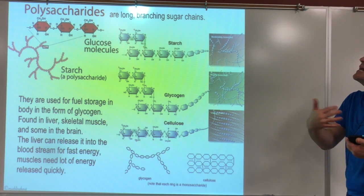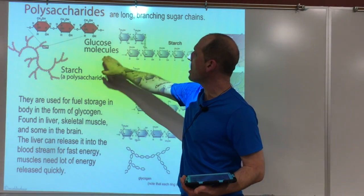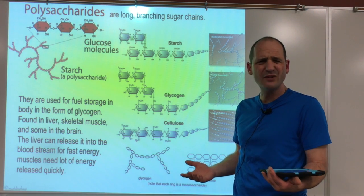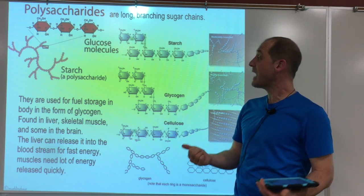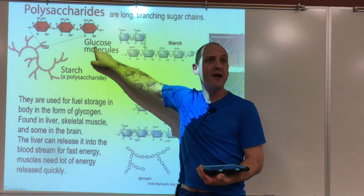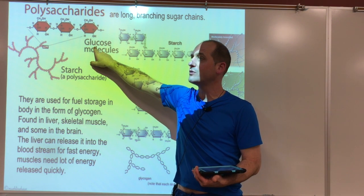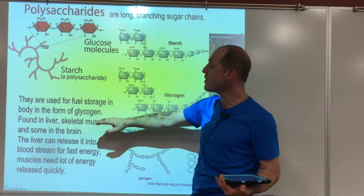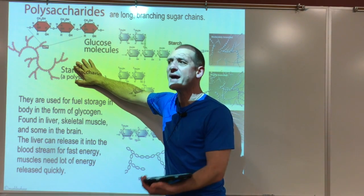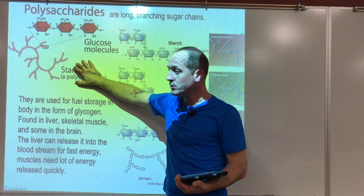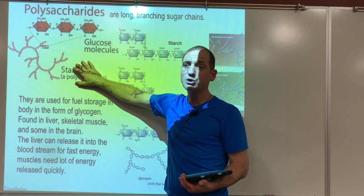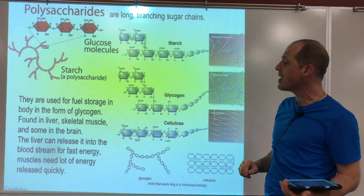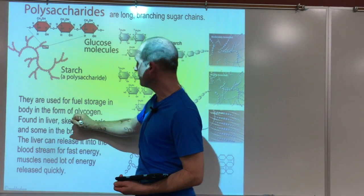Once inside the body, we can also reconnect glucose molecules to one another and make an energy storage form. We don't store a huge amount this way, but when we need it we can chop one off and put it back into the bloodstream — glucose is our universal fuel, so it gives us energy fast. That's why you see athletes chewing on a little piece of sugar: it goes into the bloodstream fast. The liver stores most of this because it has direct access; we also store some in muscle, which uses a lot of energy. A polysaccharide storage molecule in the body is called glycogen.